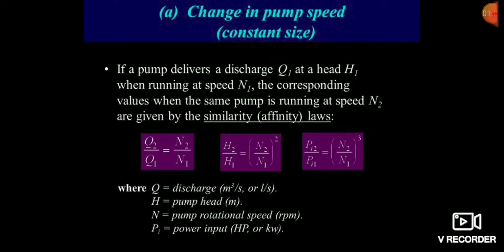Q2 by Q1 is equal to N2 by N1 — if the discharge is double, then the running speed is also double. The second relationship: pressure head is proportional to the square of running speed. If the running speed is double, then the pressure head will become four times because it is squared.